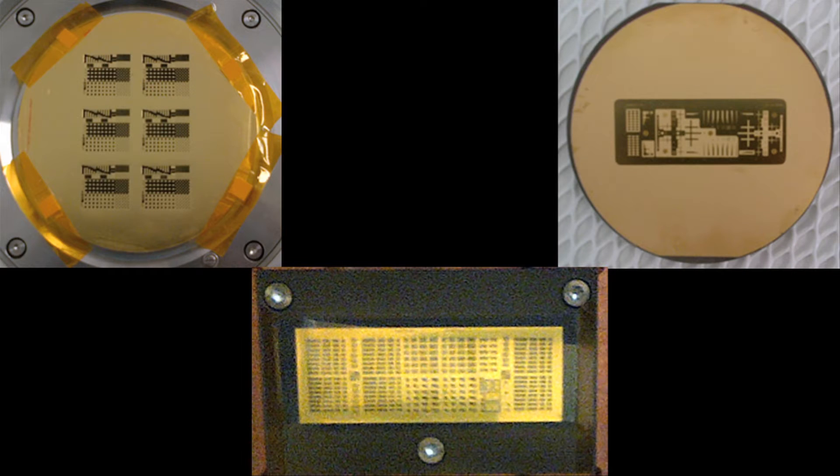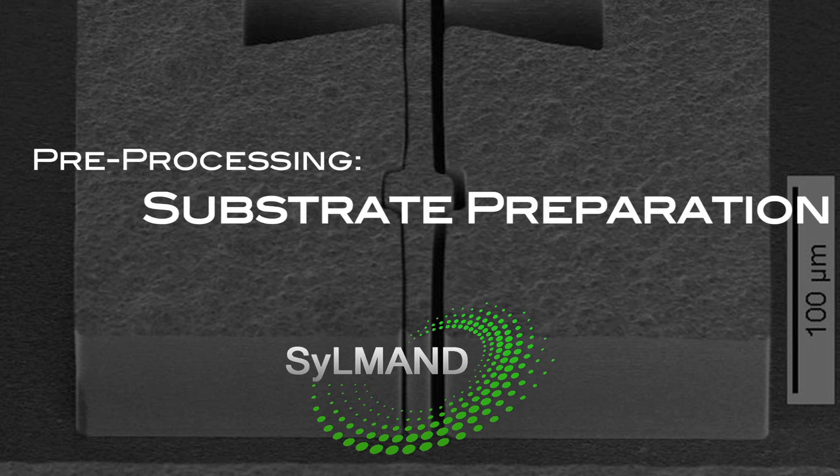Once the mask choice is made and the mask fabricated, we are ready to fabricate these polymer microstructures at Silmund. Once the substrate for the corresponding application is chosen, it then goes through a series of processes before it is ready for exposure with the mask on the beamline.